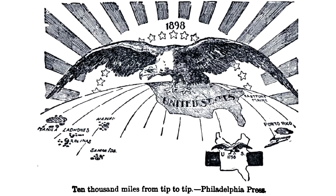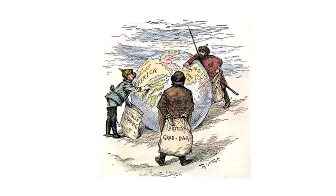This form of European presence was different from the one that characterized the economic penetration they had before. In the 17th and 18th centuries, the Europeans were actively present in Africa and Asia for economic reasons, but let the majority of these territories be politically independent. In the late 19th century, the incursion also implied political domination. The New Imperialism was characterized by a frantic rush to conquer and dominate as much people and territories as possible.